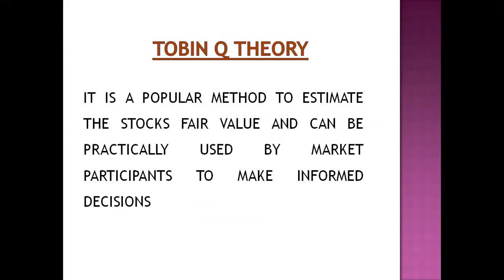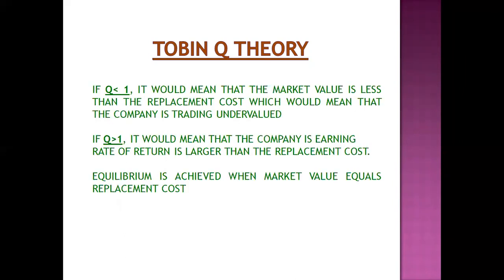Tobin Q ratio is a very popular method to estimate a stock's fair value and can be practically used by market participants — that is, shareholders — to make informed decisions. They can make a decision by using this ratio.